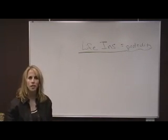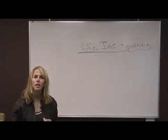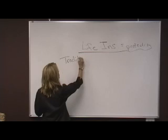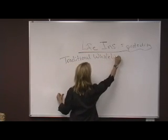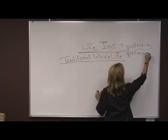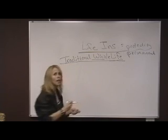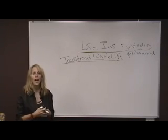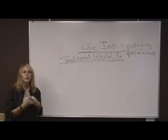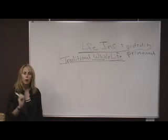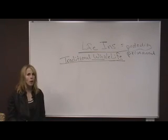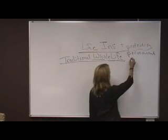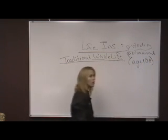There are different types of policies that we need to understand. We start off with the very first policy that was invented, and that is called traditional whole life. It ensures you for your whole life — just like it sounds, hence its name. Your whole life, according to the mortality tables developed by actuaries, will last until you are age 100. They provide permanent protection from the time in which you buy the policy, which is called your original age, until you die or until you reach the age of 100.